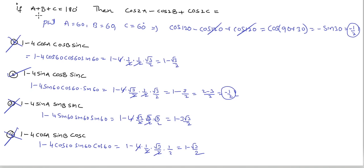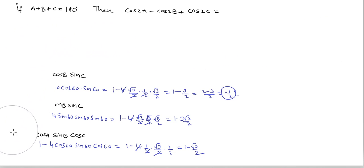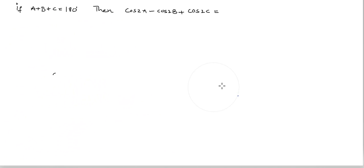So in triangle ABC, where a plus b plus c equals 180, cos 2a minus cos 2b plus cos 2c equals 1 minus 4 sin a cos b sin c. Now I explain a second trick for this problem. In triangle ABC, cos 2a plus cos 2b plus cos 2c equals minus 1 minus 4 cos a cos b cos c.